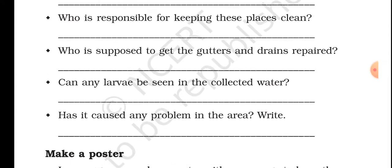We have already discussed how mosquitoes and flies spread disease. Definitely it has caused many problems in the area — malaria, dengue, chikungunya, and so many diseases can be spread through stagnant or collected water near our houses, schools, or any place with open gutters and drains not properly maintained. Such places become contaminated.